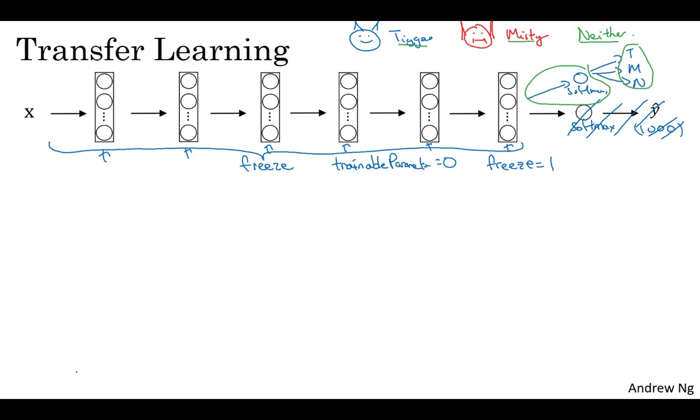One other neat trick that may help for some implementations is that because all of these earlier layers are frozen, there is some fixed function that doesn't change because you're not changing it, you're not training it, that takes this input image X and maps it to some set of activations in that layer. So one other trick that could speed up training is you just pre-compute that layer, the features, the activations from that layer, and just save them to disk.